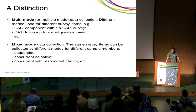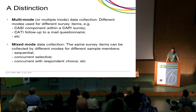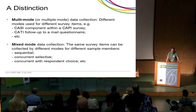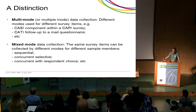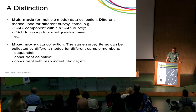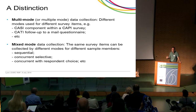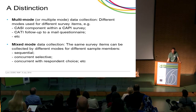I want to make a distinction between multi-mode surveys and mixed-mode surveys. A multi-mode survey is where you use different modes to collect different data items — you may have an interviewer-administered survey with a self-completion component for items particularly sensitive to interviewer bias. That's a multi-mode survey, and that's the type of design we tend to use for reducing measurement problems.